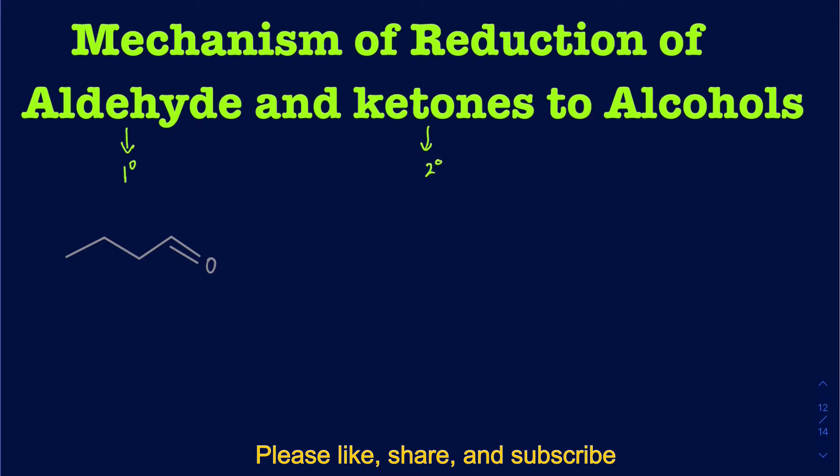If you're making a primary alcohol, you don't really have any chiral center, so you don't have to worry about stereochemistry. But if you are converting ketones into a secondary alcohol, you do have a chiral center, so you've got to worry about stereochemistry. Typically, you make a racemic mixture, which means you have a pair of enantiomers.